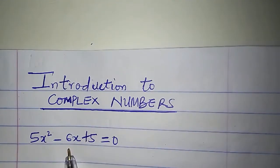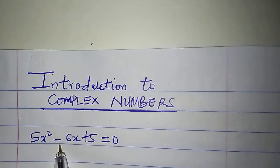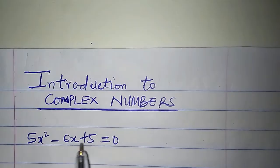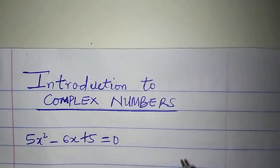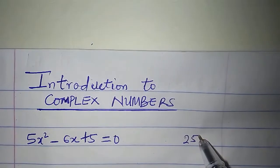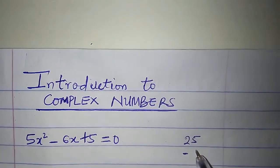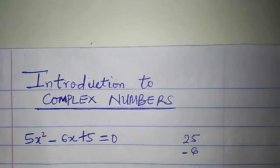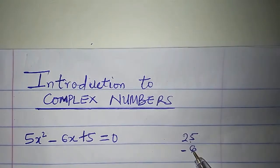Looking at this equation, I can see that the left hand side cannot be factorized. 5 times 5 is 25. I need two numbers whose product is 25 and whose sum is minus 6. Under the set of real numbers, there are no two numbers whose product is 25 and whose sum is minus 6.